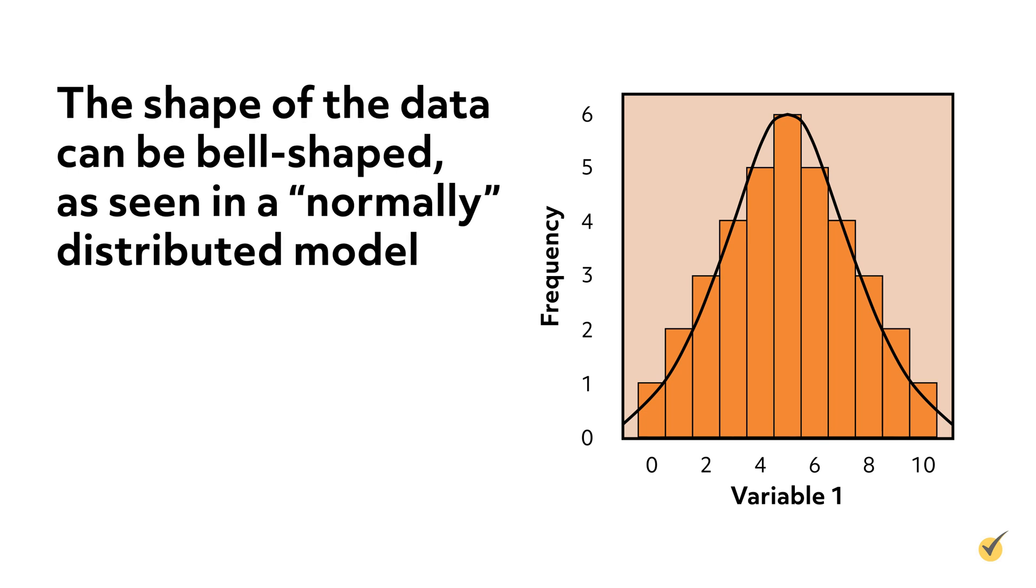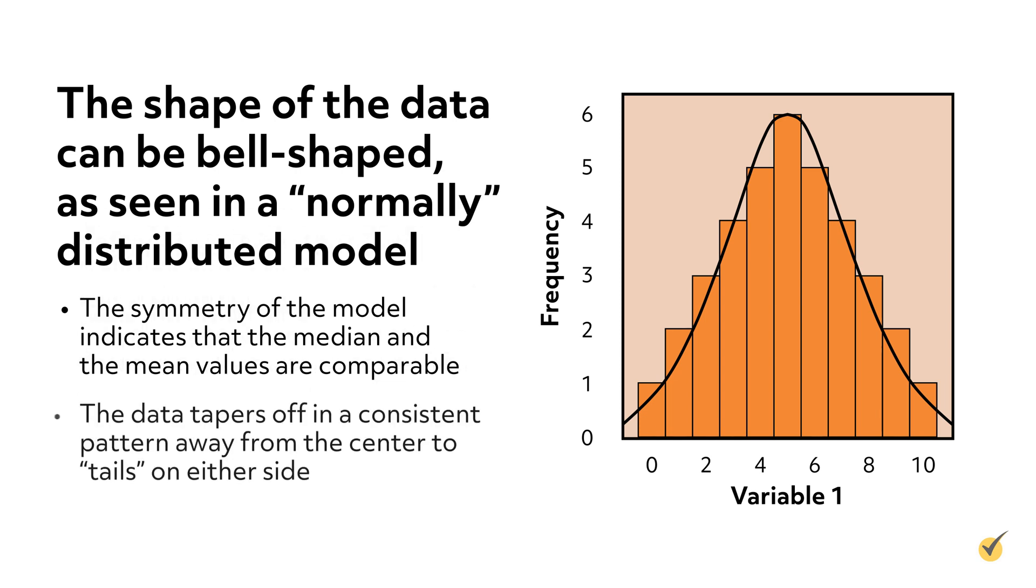The shape of the data can be bell-shaped, as seen in a normally distributed model. The symmetry of the model indicates that the median and the mean values are comparable. The data tapers off in a consistent pattern, away from the center, to tails on either side.